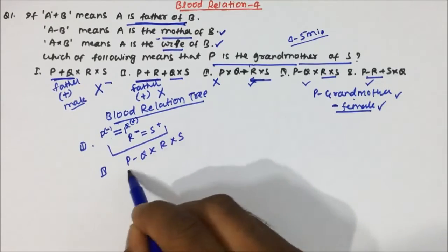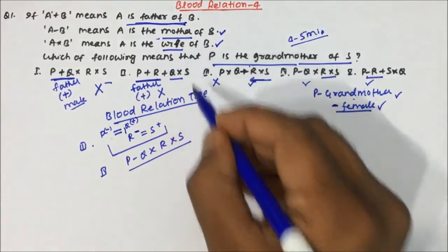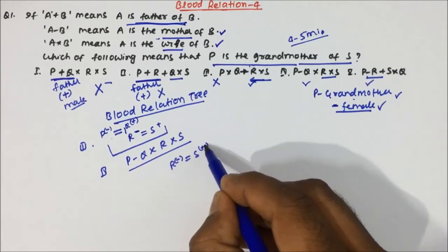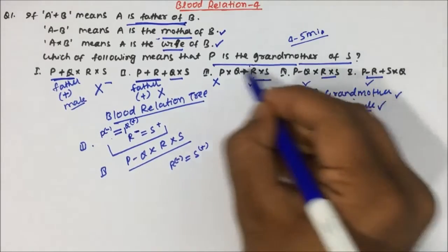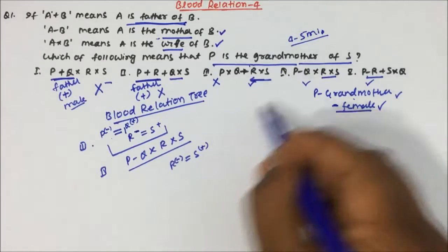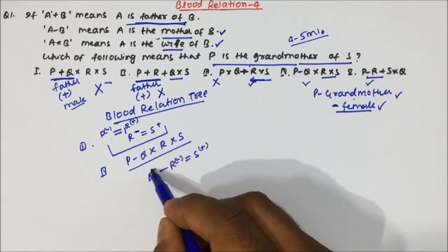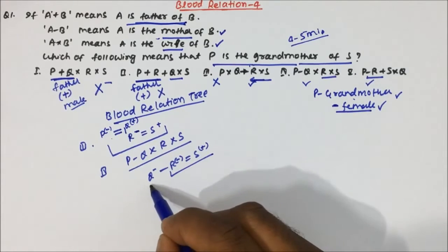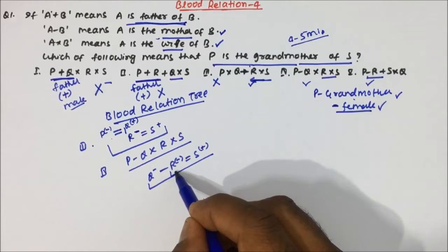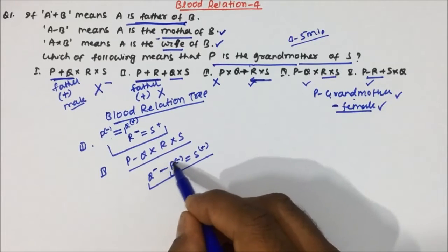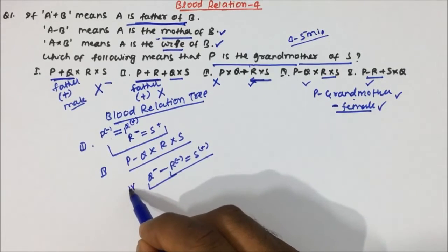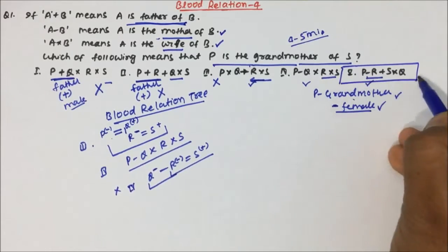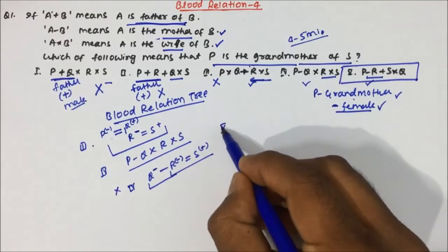Option four: p - q × r × s. Starting from the right: r × s means r is wife of s, so r is female and s is male. Then q × r means q is wife of r — but r is already female, and female and female cannot be married, so option four is also wrong.